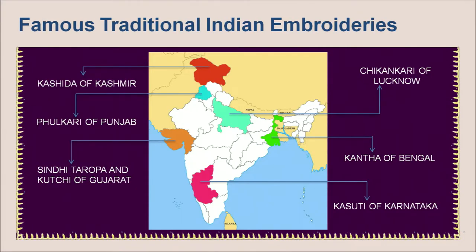You can see over here in the map of India that embroidery comes from different states of India like Kashida of Kashmir, Chikankari of Lucknow, Phulkari of Punjab, Kantha of Bengal, Sindhi Taropa and Kachh embroidery of Gujarat, and Kasuti of Karnataka. Now let us see all of them one by one.